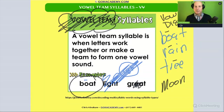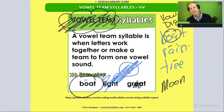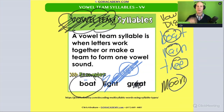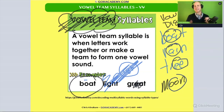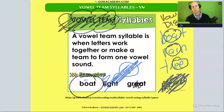Because 'vowel digraph' would work for all four of these — it would work for 'boat,' 'rain,' 'tree,' and 'moon' — where we have two vowels that make one sound. That could be considered a vowel digraph. So these would all be single-syllable words with vowel digraphs in them. That would be the safest way to play it.